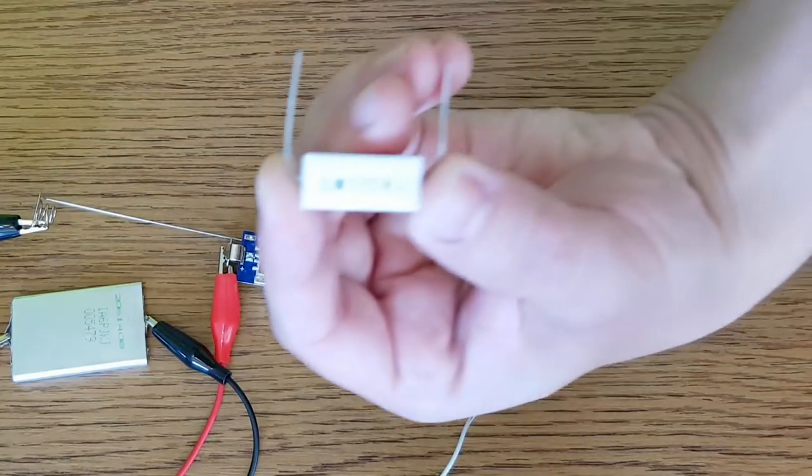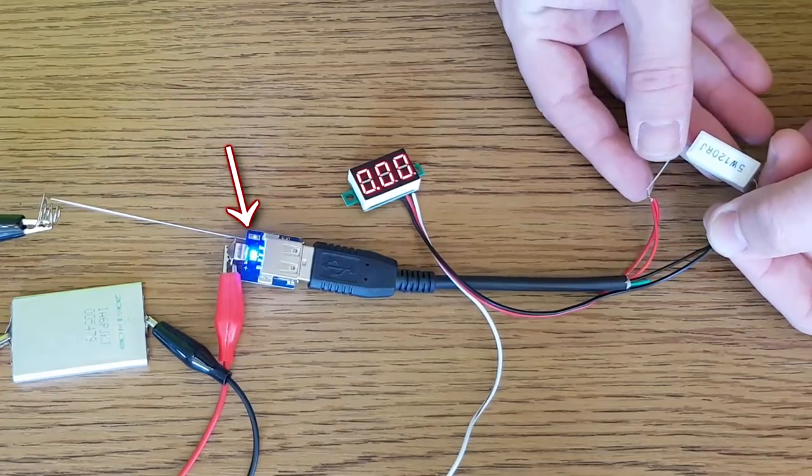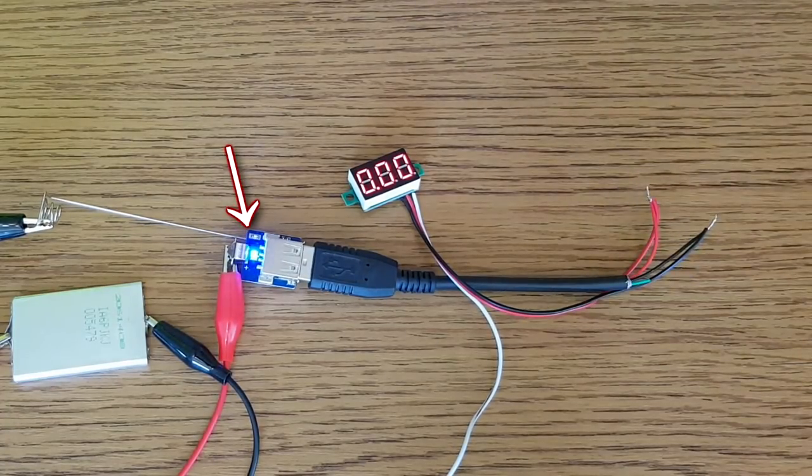I'm gonna use this 120 ohms 5 watts resistor as a dummy load. When the power bank detects the dummy load, it powers on and the blue LED lights up.